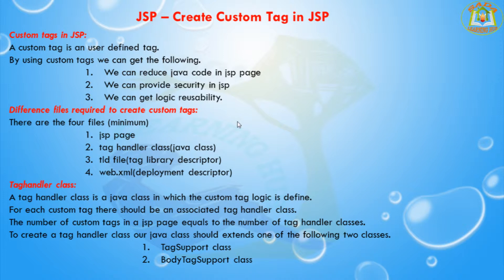First of all, let me discuss what is a custom tag. A custom tag is a user-defined tag. If you are implementing a custom tag there are four major advantages. First, we can reduce Java code in a JSP page. Second, we can provide security in the JSP. Third, we can get logic responsibility. If you see standard action tags there is predefined logic — it's not possible to edit that logic. For example, JSP colon forward is used to forward a JSP page to a JSP, servlet, or HTML. But with custom tags, we can use our own custom logic — whatever you want.